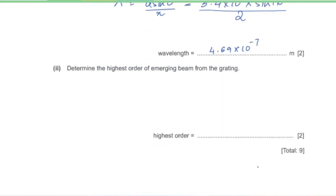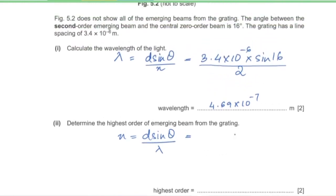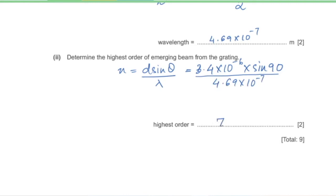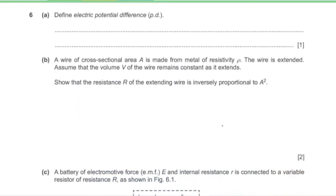Part 2: Determine the highest order of emerging beam. The maximum possible order occurs when the angle is 90 degrees: n = d sin90° / λ = 3.4 × 10⁻⁶ / 4.69 × 10⁻⁷ = 7. So the highest order is 7.